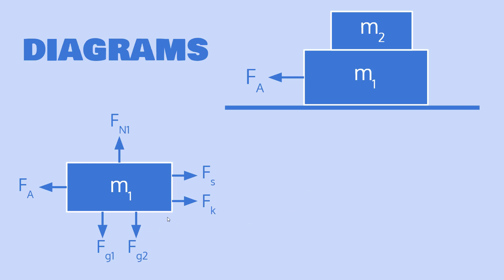For the bottom block we have the applied force and the force of gravity — those are pretty straightforward. We also have the normal force because it's on a table, so the table is pushing up on the block. We have a force from the top block pushing down, which we can call Fg2. We also have two forces of friction: Fs, static friction between the two blocks, and Fk, kinetic friction from the bottom block sliding along the table. Make sure you include all of them in your diagram.